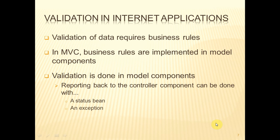If you're going to perform validation, it means that you've got some business rules in place. And the business rules are implemented in the model components of our MVC architecture. Therefore, it's the model components that will do the validation of the data. They then will report back to the controller component the outcome of the validation. And there are two basic ways in which this can be done: either using a status bean or an exception. Later on, I'll show you examples of both types of approach.